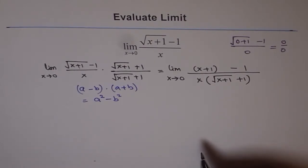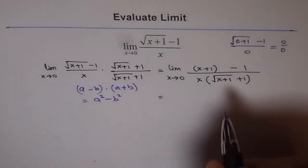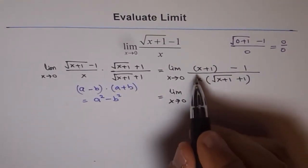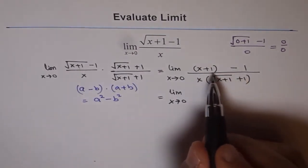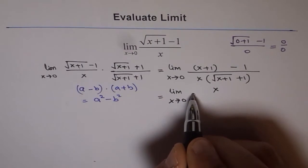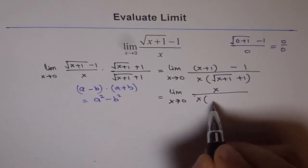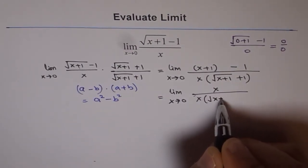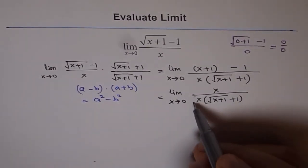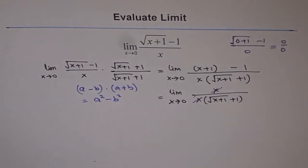In the numerator, what do we get? x plus 1 minus 1 is 0, so we get only x. So x over x times square root of x plus 1 plus 1. Now we can cancel these x's. x divided by x is 1.